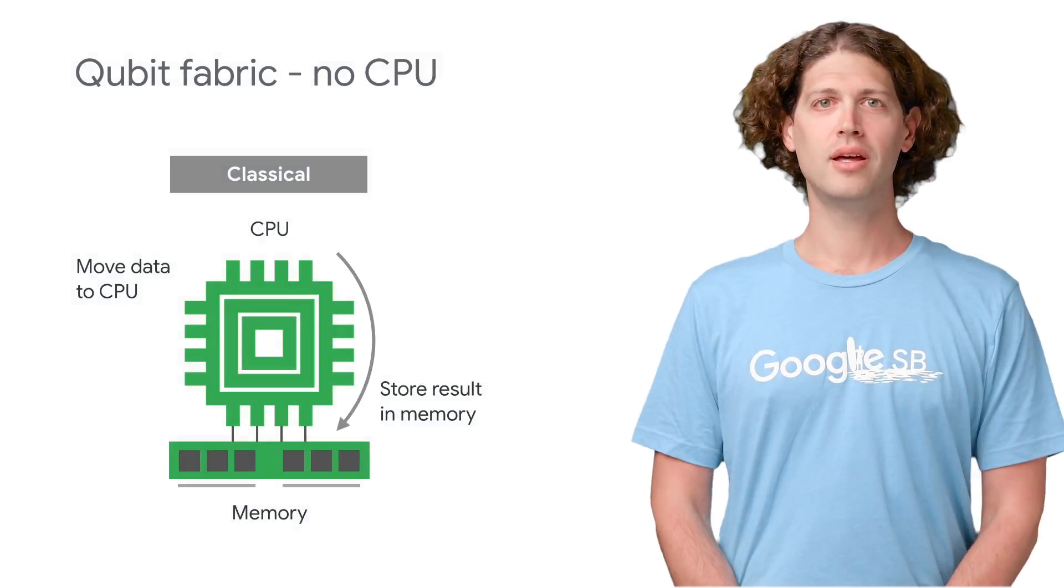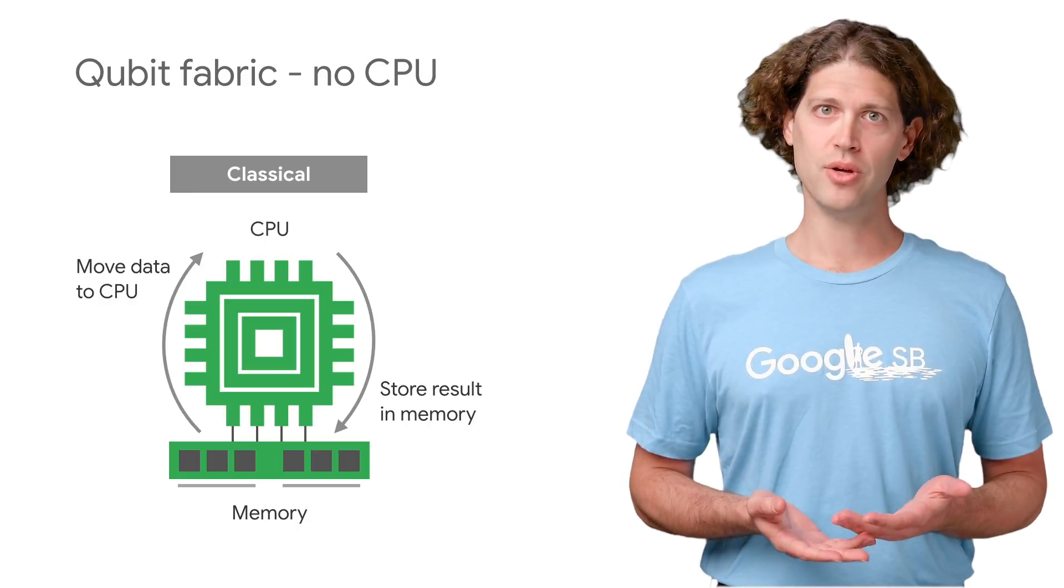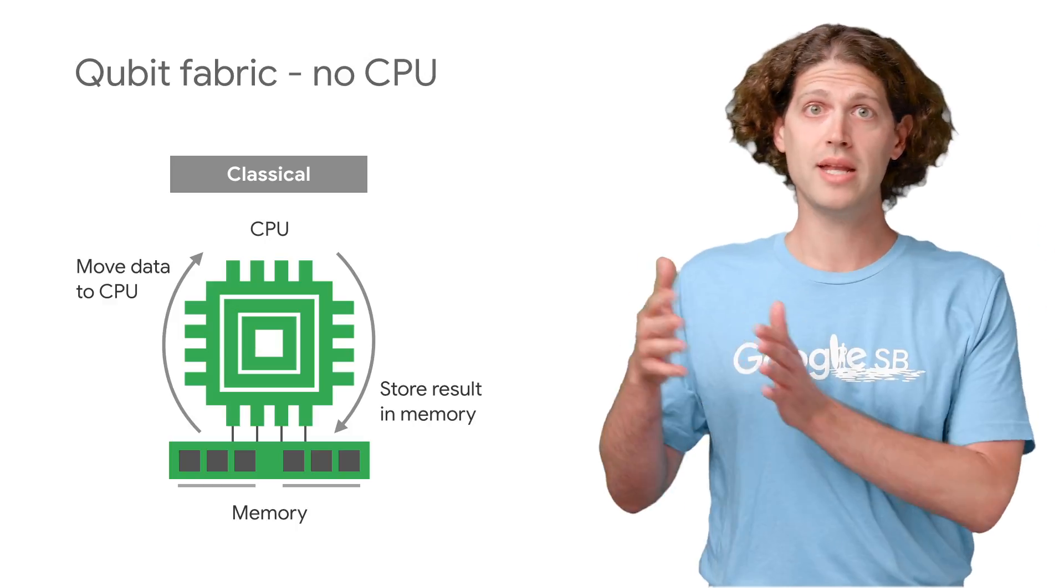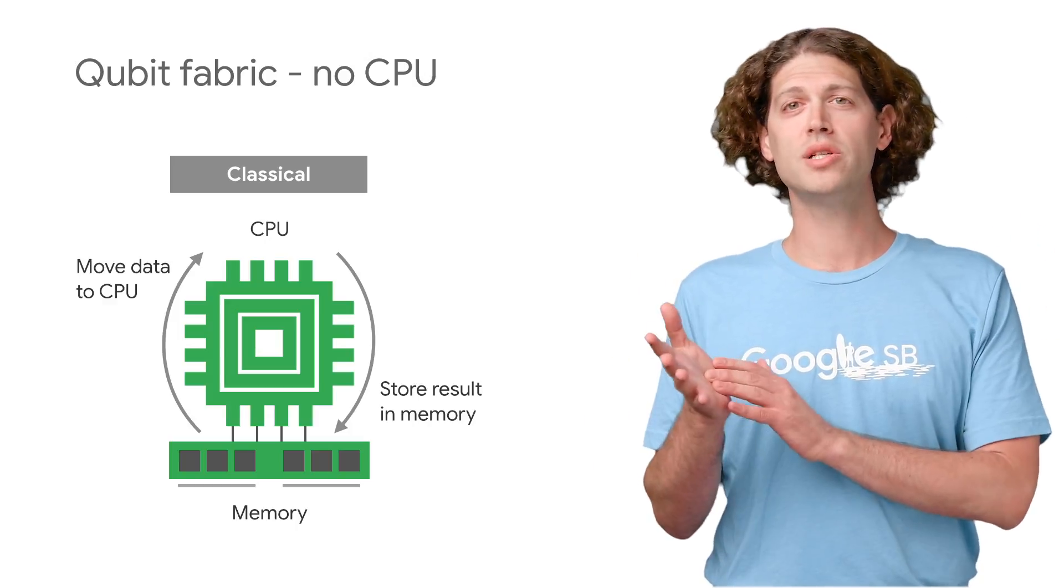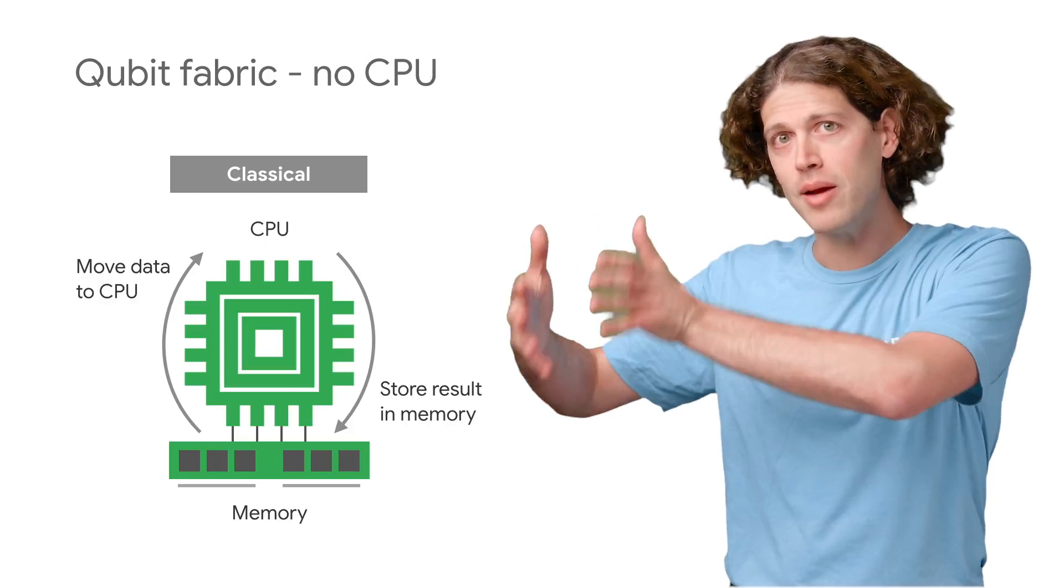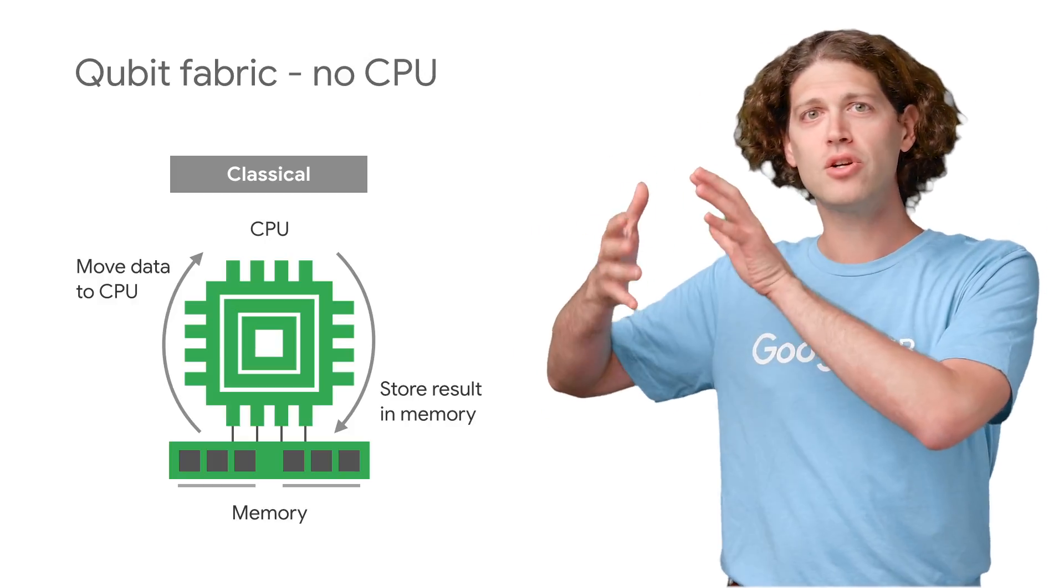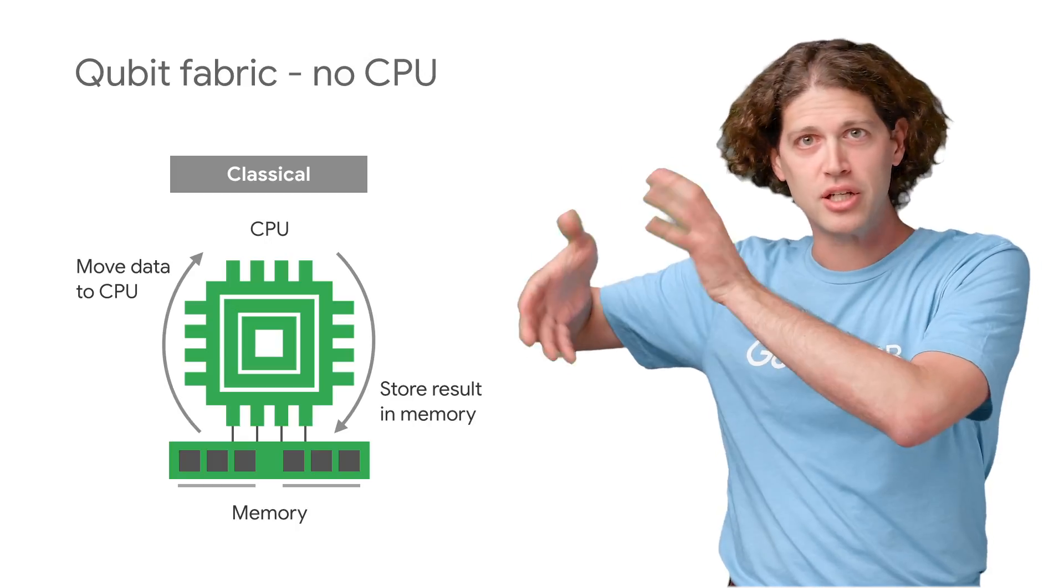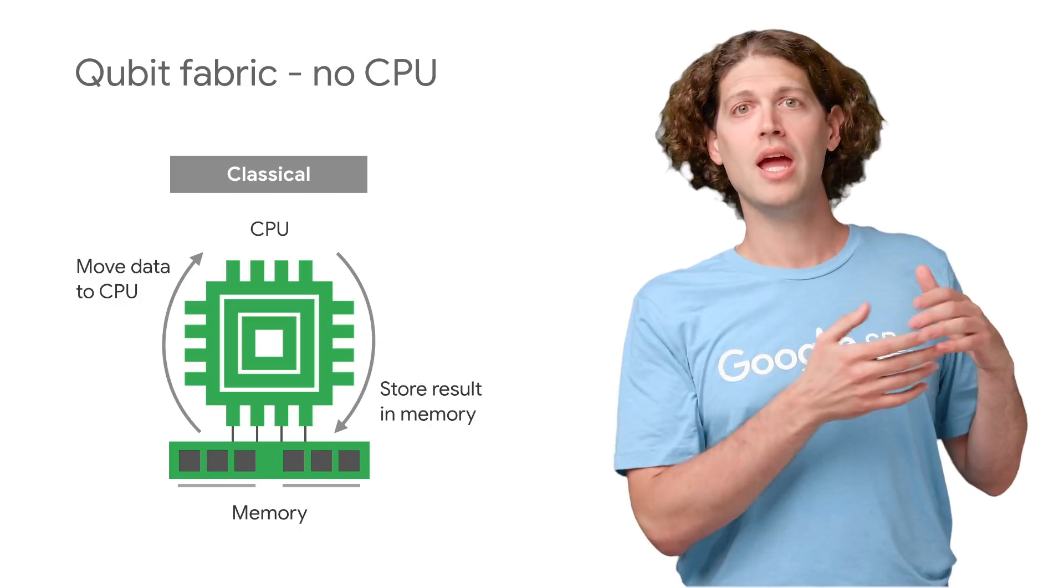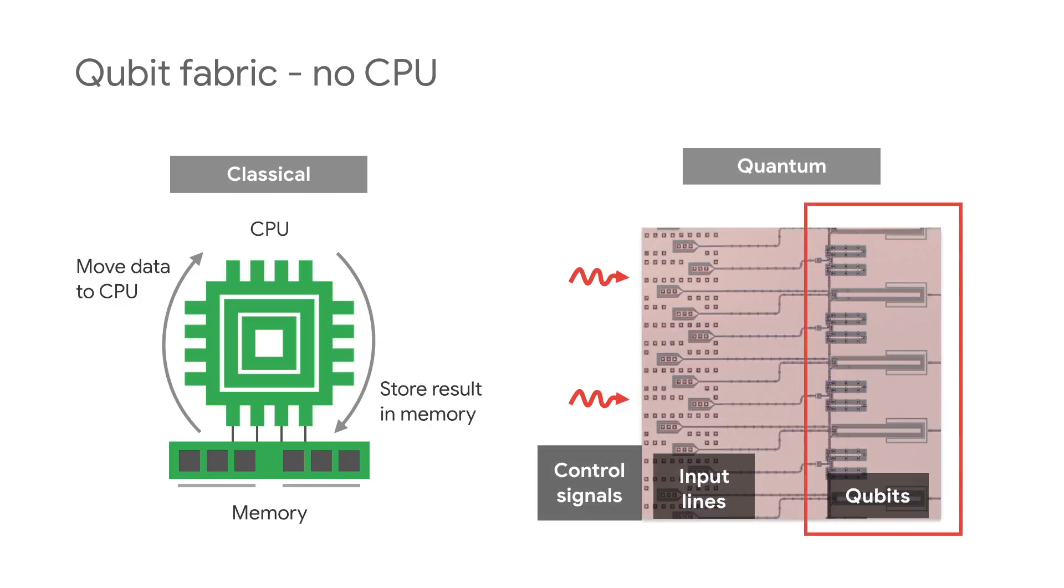Now let's take a minute to make a few comments on how superconducting qubit architecture differs from conventional computers. In a conventional computer, memory and logic processing are separated into the RAM and CPU. When we want to do a computation, we first move the data from the RAM to the CPU. Then the circuits in the CPU do the computation. And finally, the resulting data is written back to RAM.